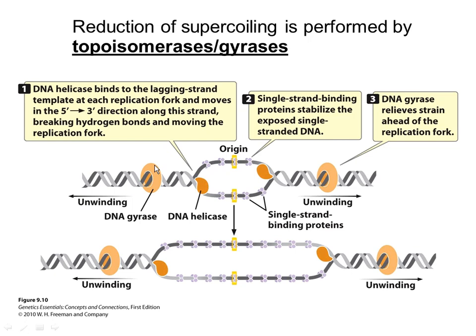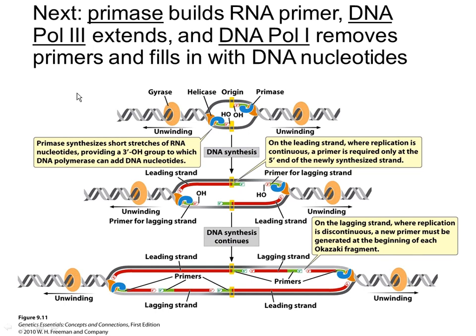Ahead of the replication fork, there is going to be very tight coiling of the DNA because as you unwind the DNA at the fork, that coiling tension transfers ahead of the fork and starts making knots. There is an enzyme called gyrase — also called topoisomerase — which slides ahead of the replication fork and makes little snips as the DNA starts getting wound very tightly, releasing the tension of supercoiling or overwinding of the DNA. Now we're ready to start building the new strands.